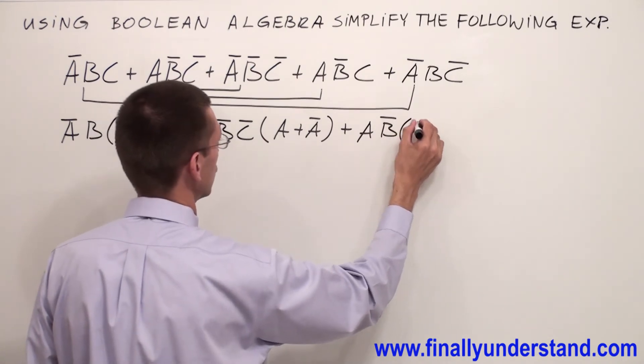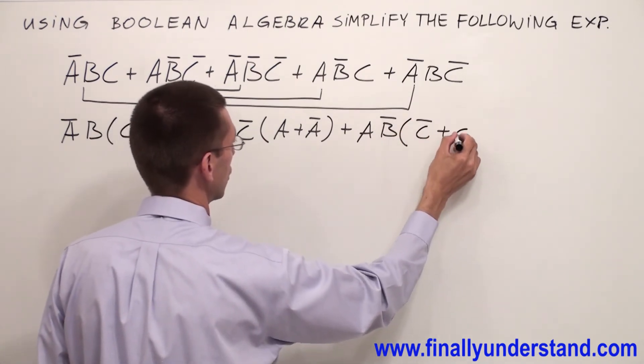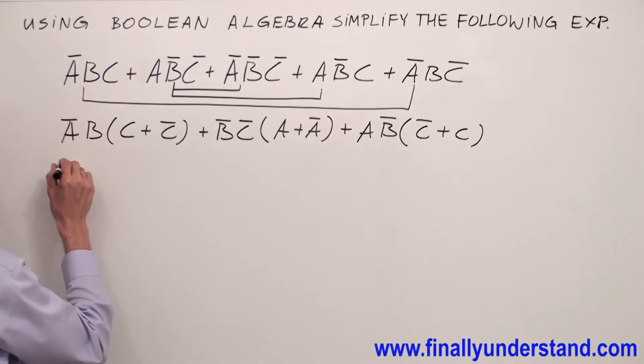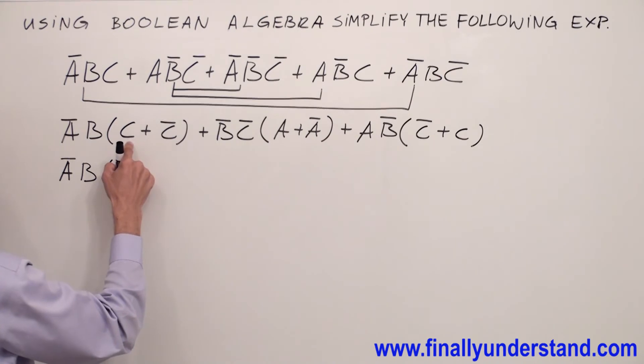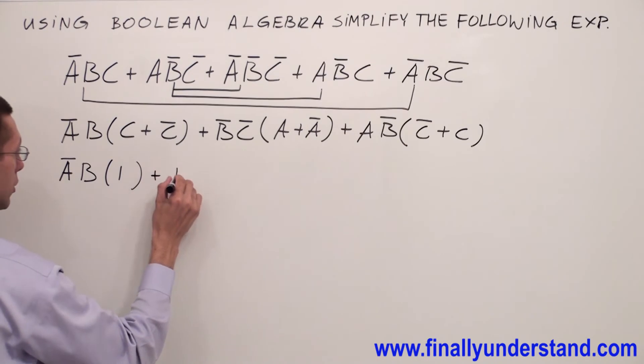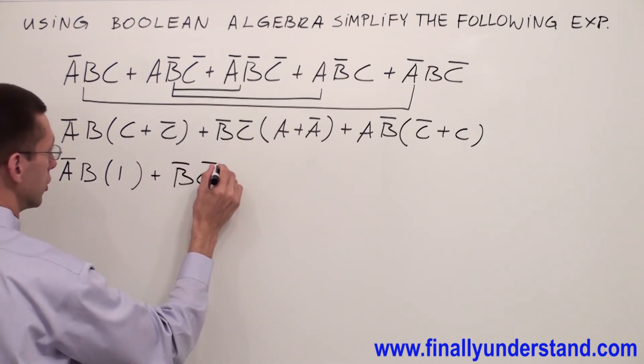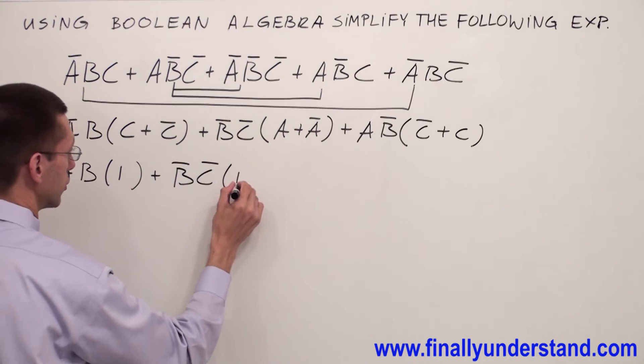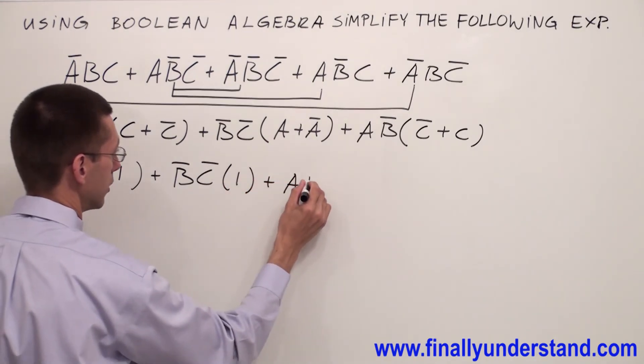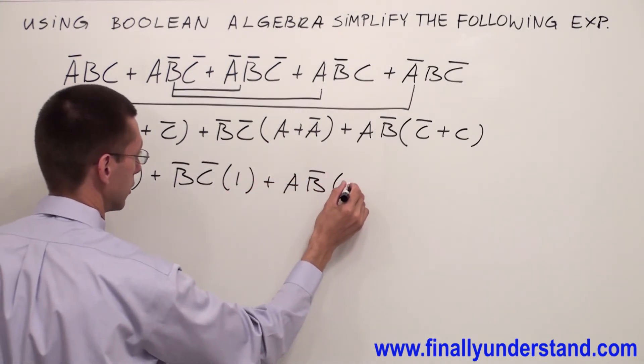So I have A'B times one because complements to each other are going to give me one, or B', C' times one, or A', B' times one.